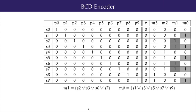Finally, the lowest order bit M0. From the table, M0 is 1 exactly when one of the odd numbered keypad buttons is cleanly pressed: 1, 3, 5, 7 or 9. So M0 if and only if S1 or S3 or S5 or S7 or S9. And in a circuit, M0 is the output of a 5-input OR gate with the corresponding inputs.